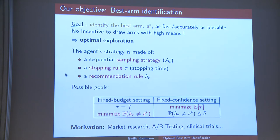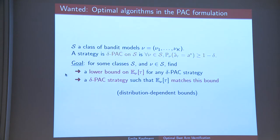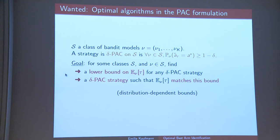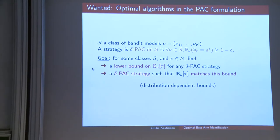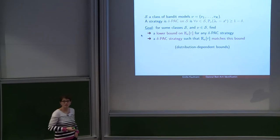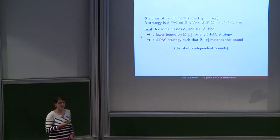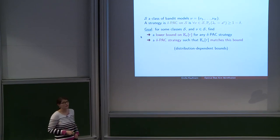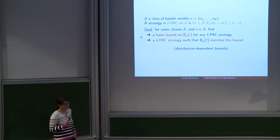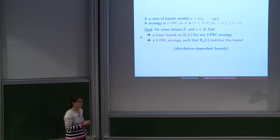In this talk we will focus on the fixed confidence setting. Given a class of bandit models — a set F of possible bandit models, for example where all arms are Bernoulli distributions — we want to build a strategy that is δ-PAC on this class: we can guarantee that for any bandit model in this class it will output the best arm with probability larger than 1−δ. Among δ-PAC strategies we want to minimize the sample complexity. The answer will consist of first a lower bound on this sample complexity, and then exhibiting a δ-PAC strategy for which the expected sample complexity matches our lower bound.